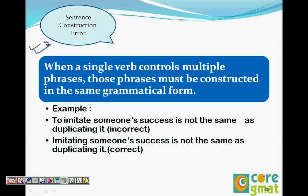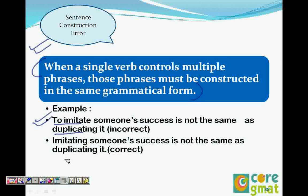This is the error we see in sentence construction or sentence structure. When a single verb controls multiple phrases, those phrases must be constructed in the same grammatical form. If they are not, then there is an error. For example, 'to imitate someone's success is not the same as duplicating it' has two phrases: 'to imitate' and 'duplicating.' It should be either 'imitating someone's success is not the same as duplicating it' or 'to imitate someone's success is not the same as to duplicate it.'